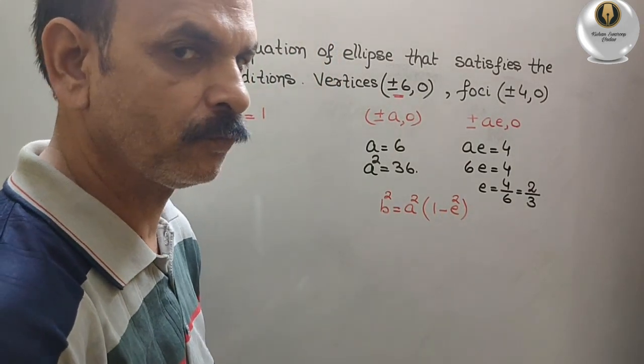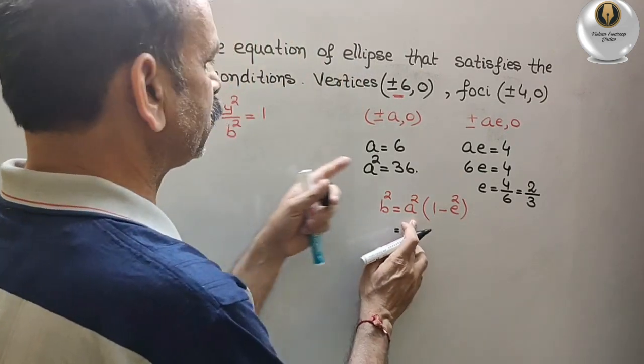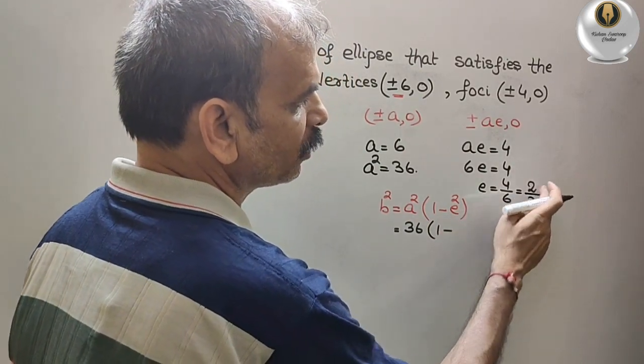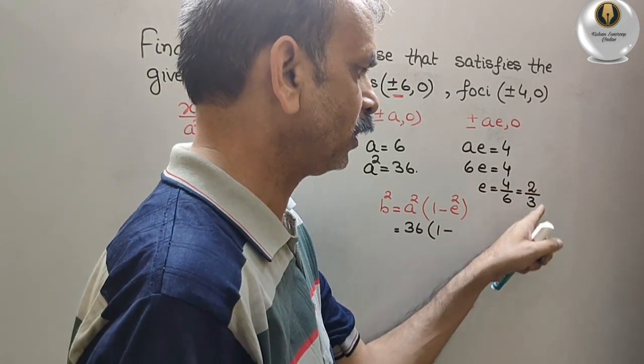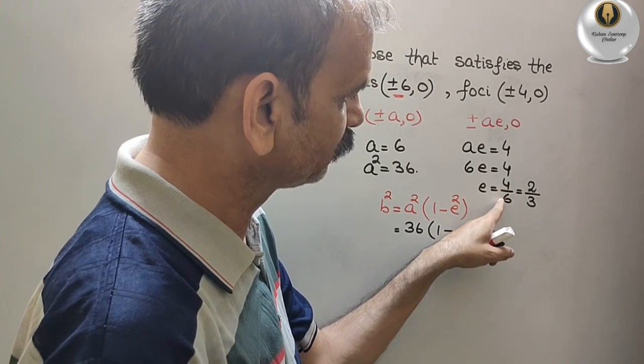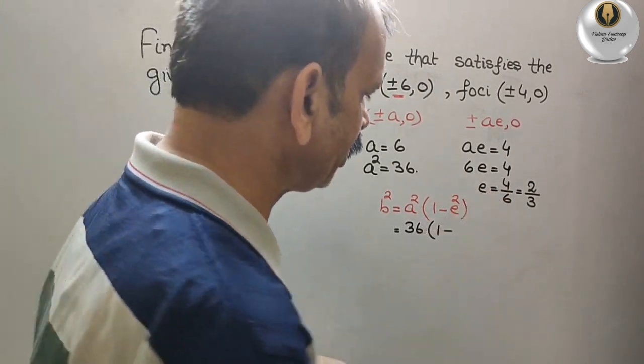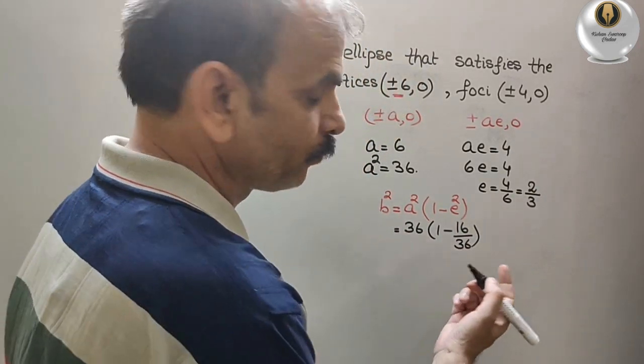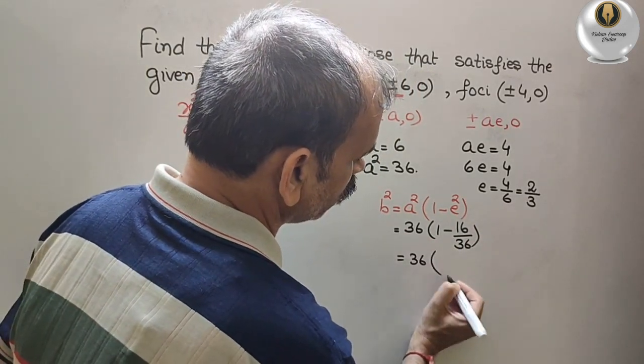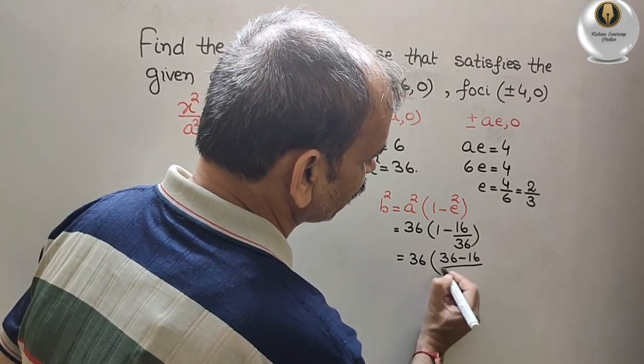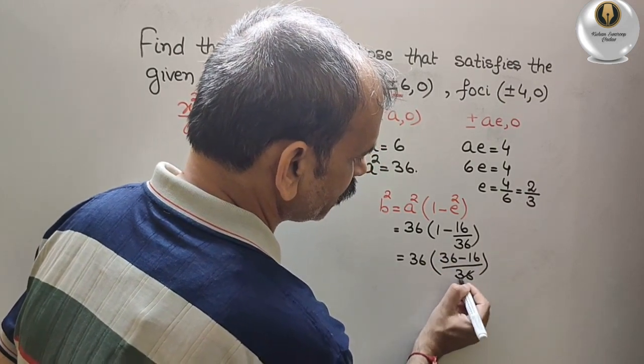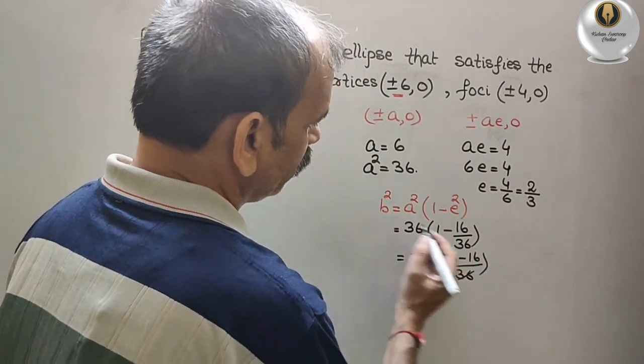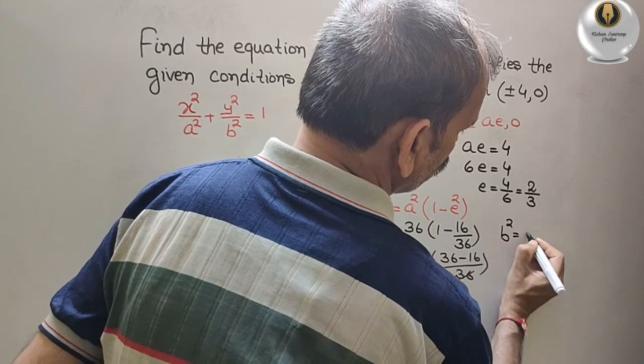Solve this. What we get? We will get a square is 36. 1 minus e square. That means 2 square is 4, 3 square is 9. Or you can go for this: 4 square is 16 by 6 square is 36. Solve this. If you solve this, you will get 36 into 36 minus 16 by 36. This 36, this 36 is gone. What we will get? b square is 36 minus 16. So here we will get b square is equal to 20.